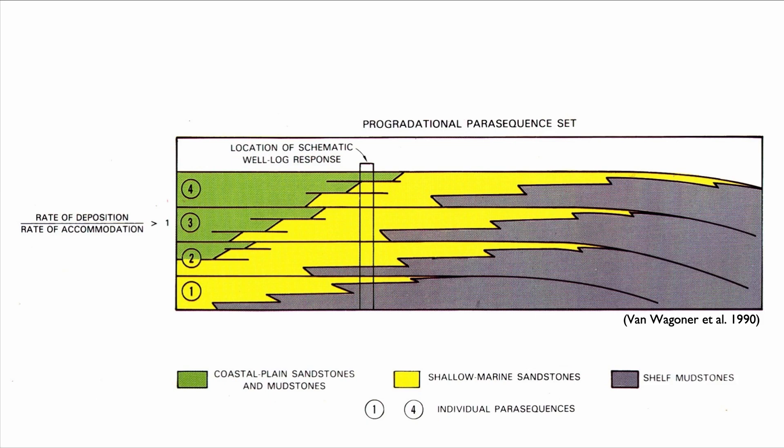Here's an example of a parasequence. In the middle, we have the location of a well or potentially an outcrop location. We can see the stacking of parasequences. Remember that parasequences are topped with flooding surfaces. So we have parasequence one, parasequence two, three, and four here.